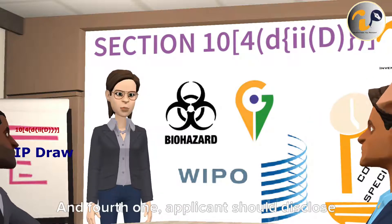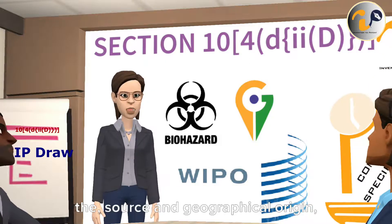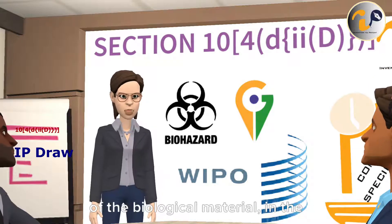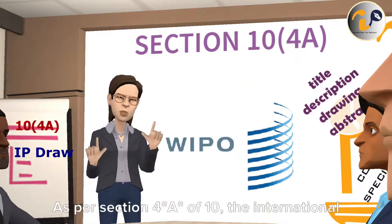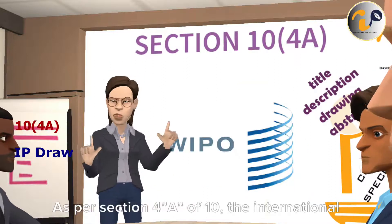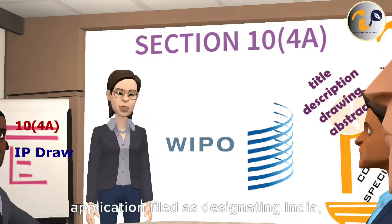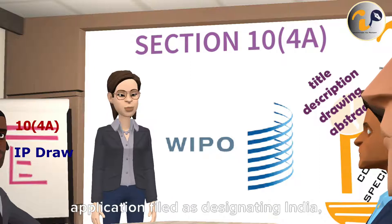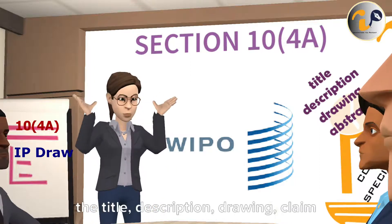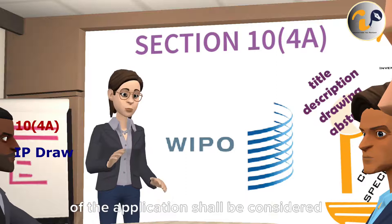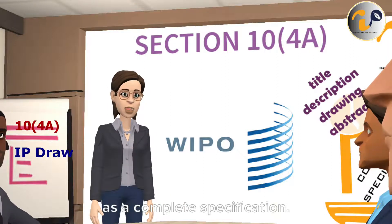Third, access to the material in the depository institution only after the application date of patent in India, or if a priority is claimed, after the date of the priority. Fourth, applicants should disclose the source and geographical origin of the biological material in the specification. As per Section 10(4), for an international application filed designating India, the title, description, drawing, and claims of the application shall be considered as a complete specification.